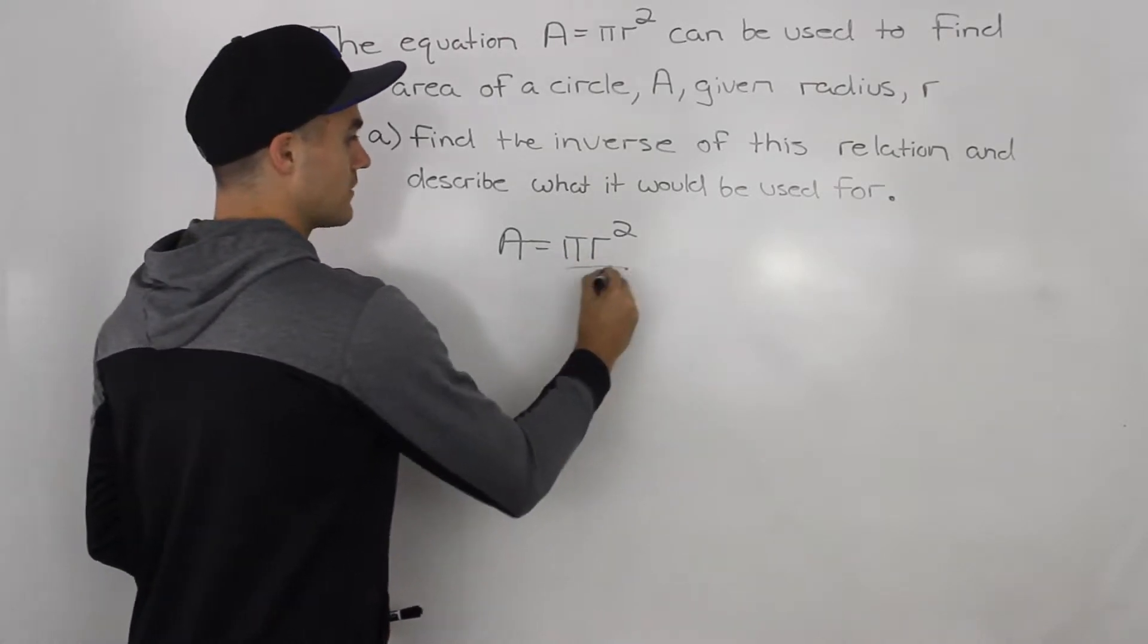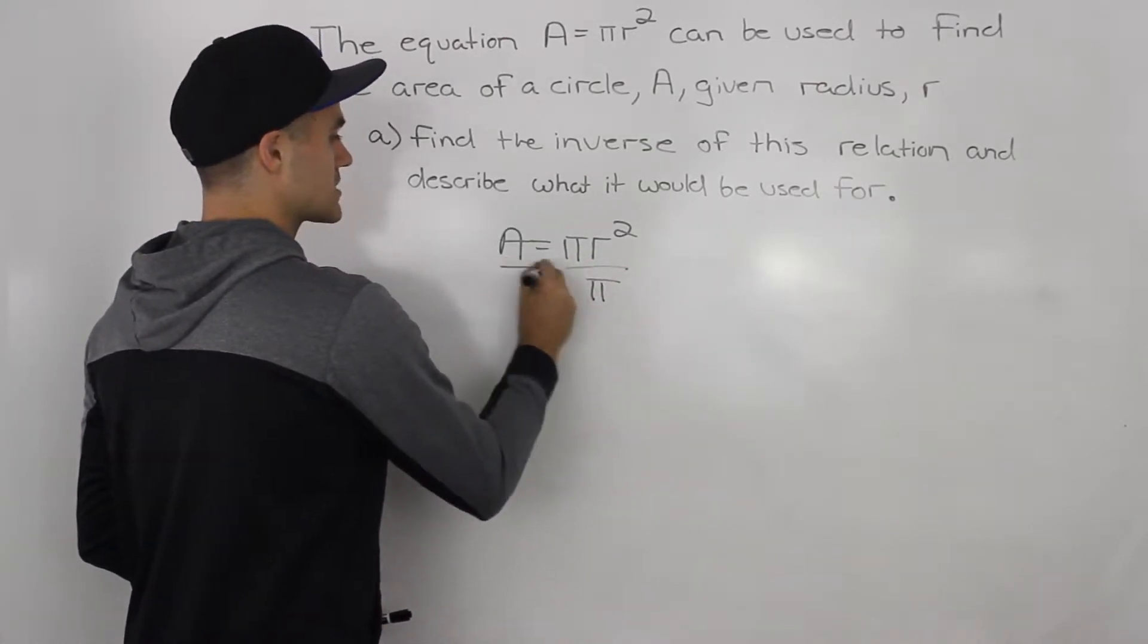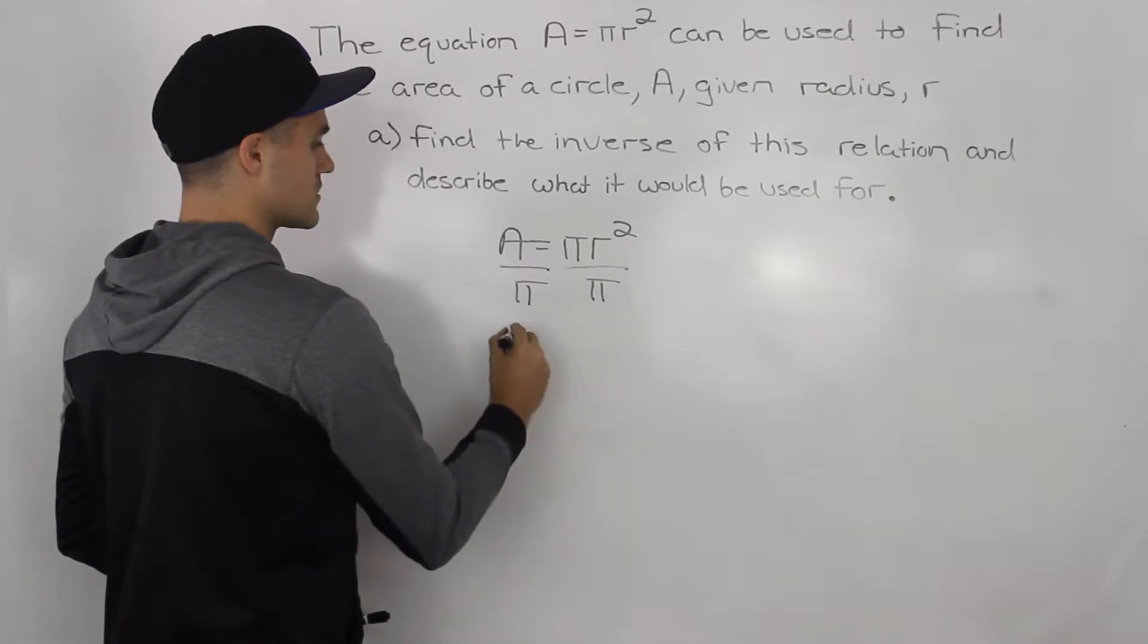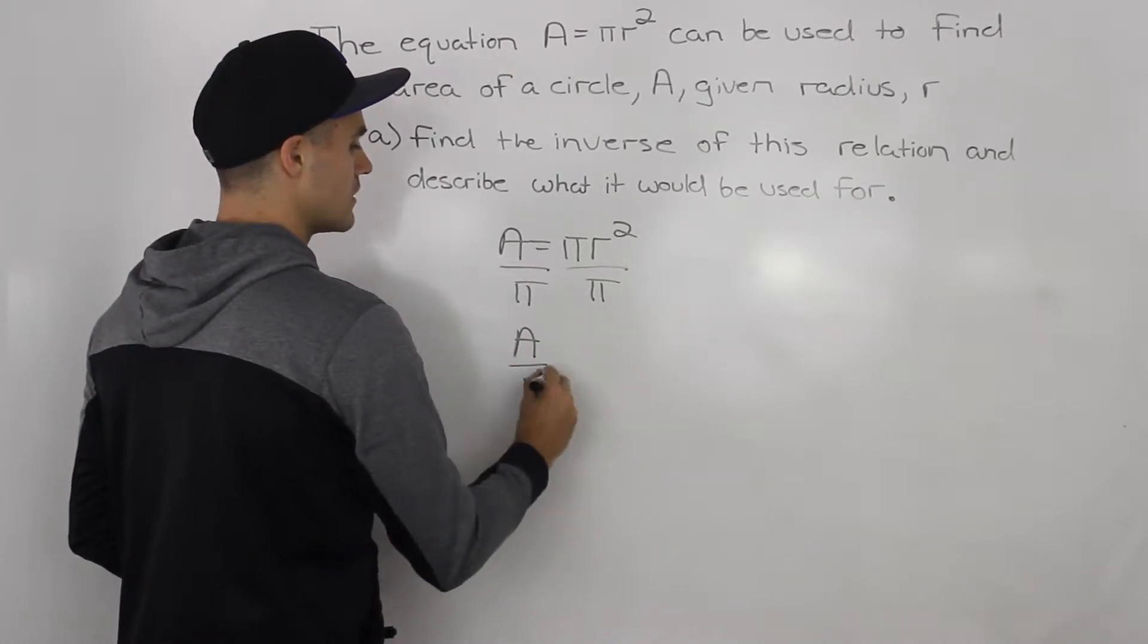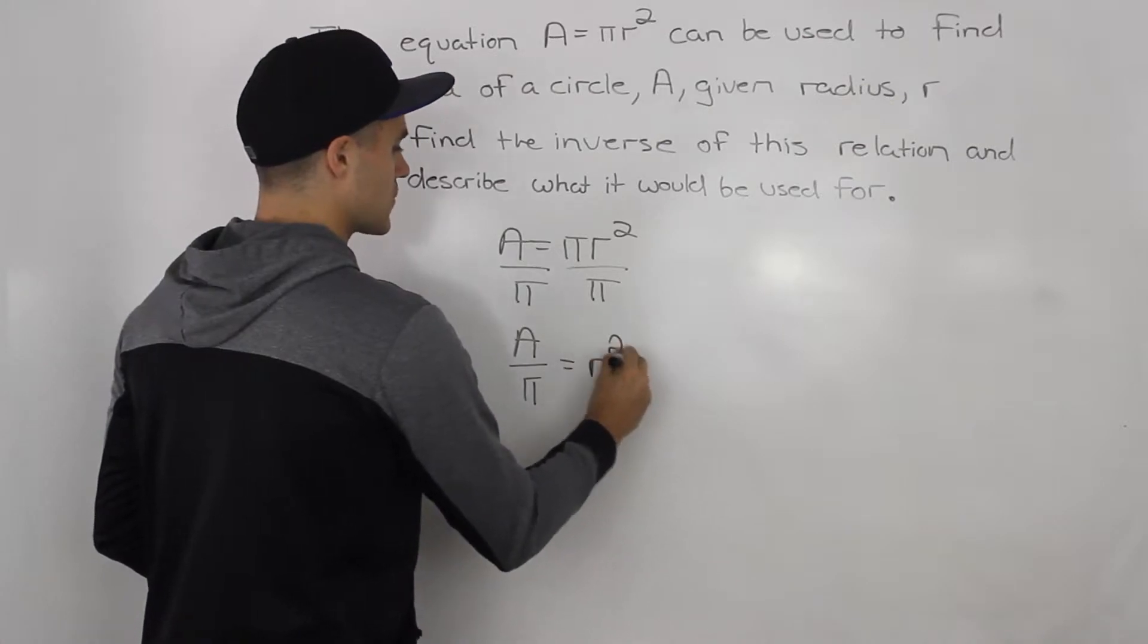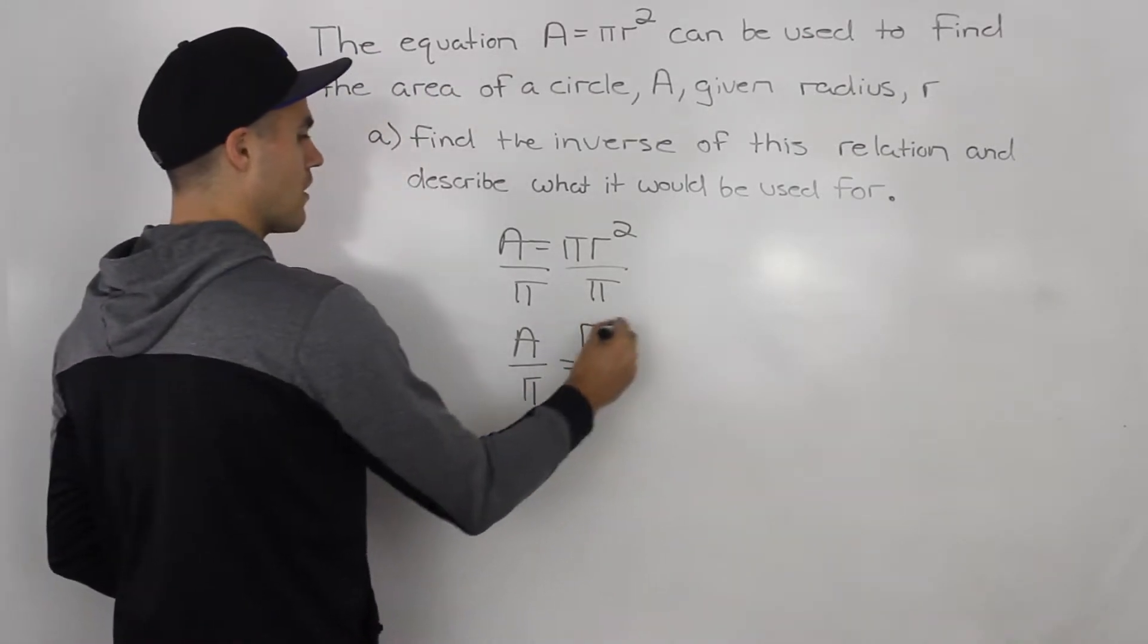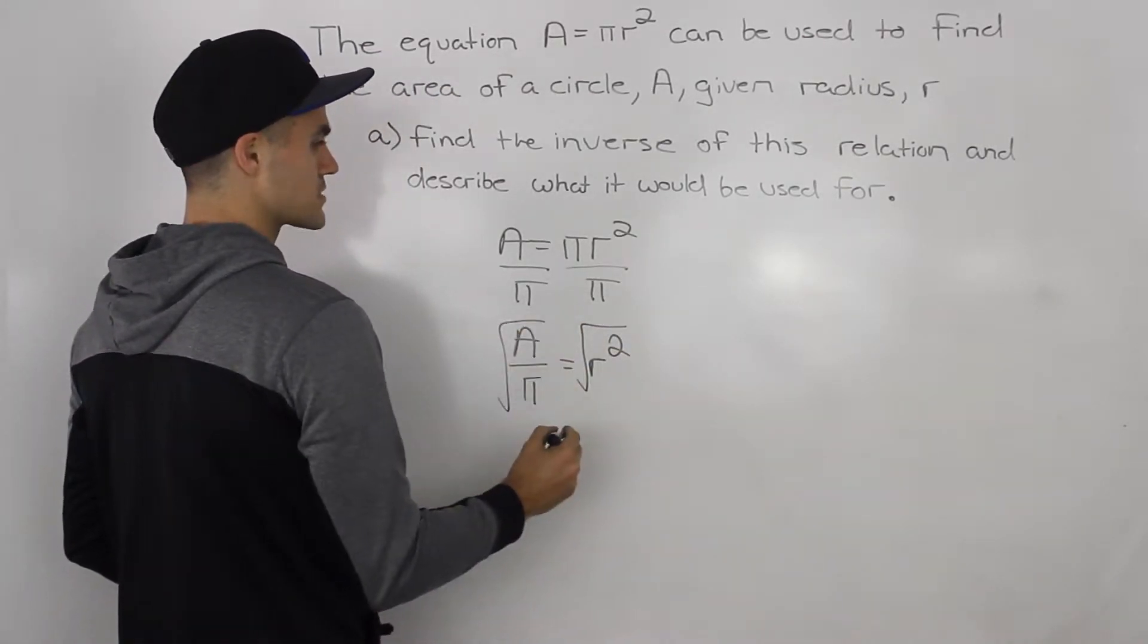So to do that, we're going to divide both sides by π. So we'd have A/π = r², and then to isolate for the r, square root both sides.